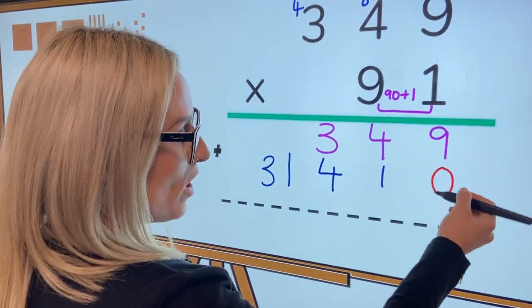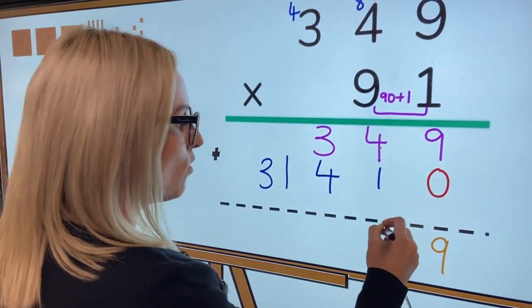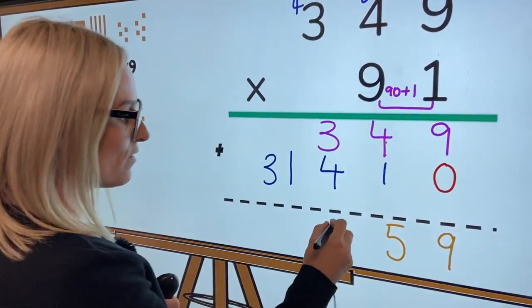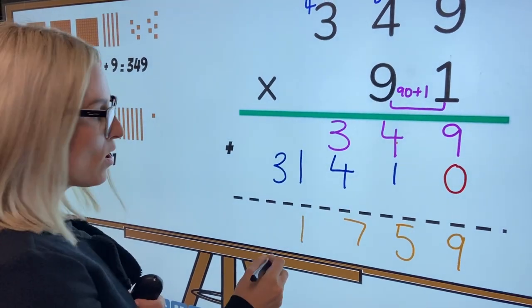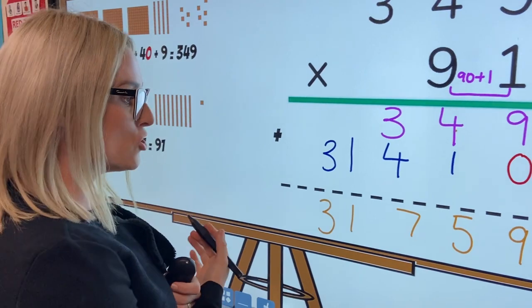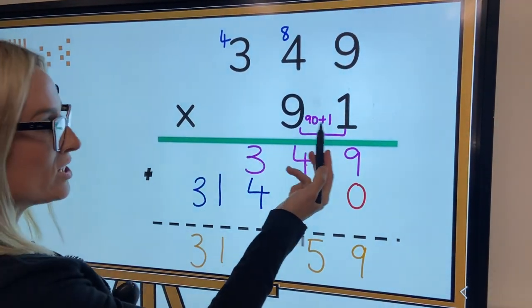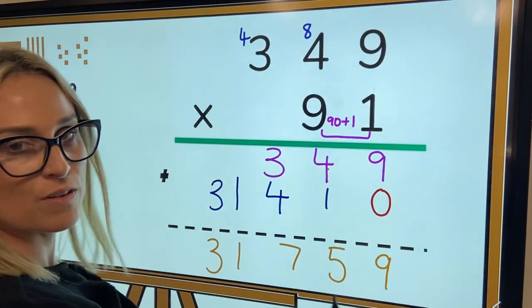So we're going to add nine to zero, which we know is going to be nine. We're going to add four and one, which gives us five. We're going to add three and four, which gives us seven. We're going to add one to nothing, which gives us one and three to nothing, which gives us three. So in total, our answer of 349 multiplied 91 times gives us 31,759.